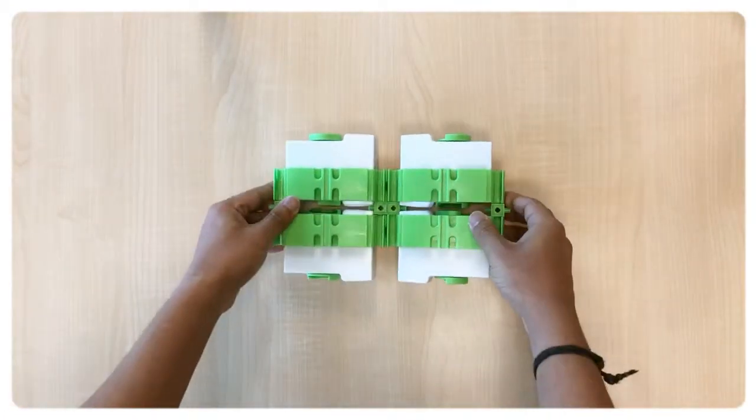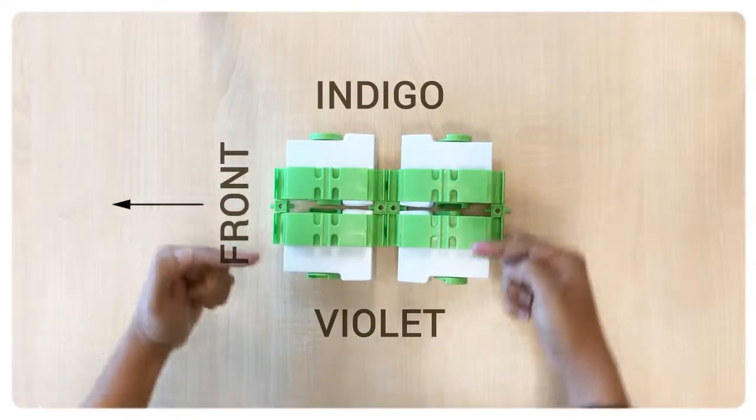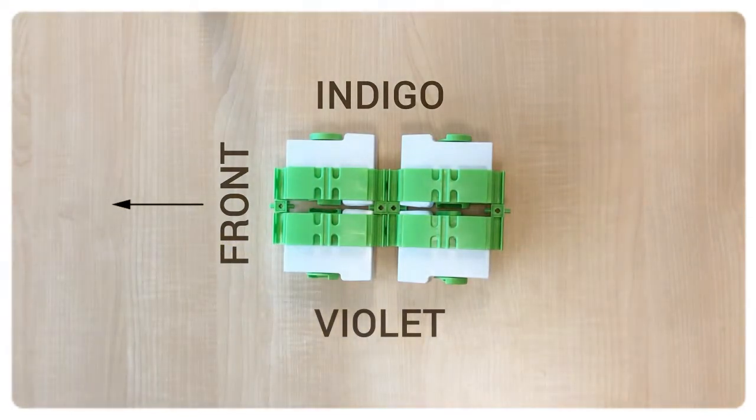We need to make sure that we have the colors indigo on the right side of the rover and violet on the left side of the rover as can be seen here in the video.